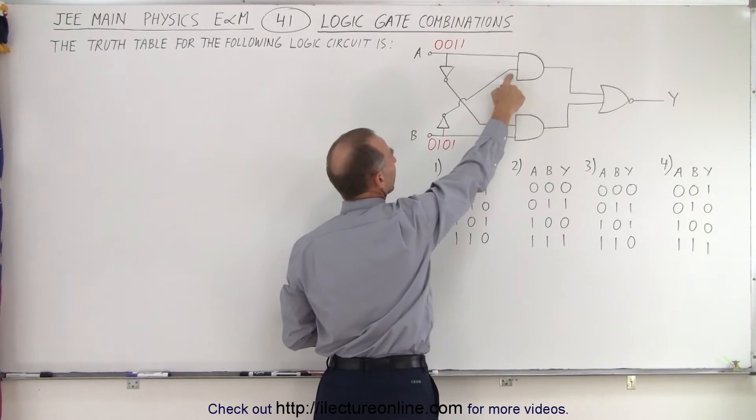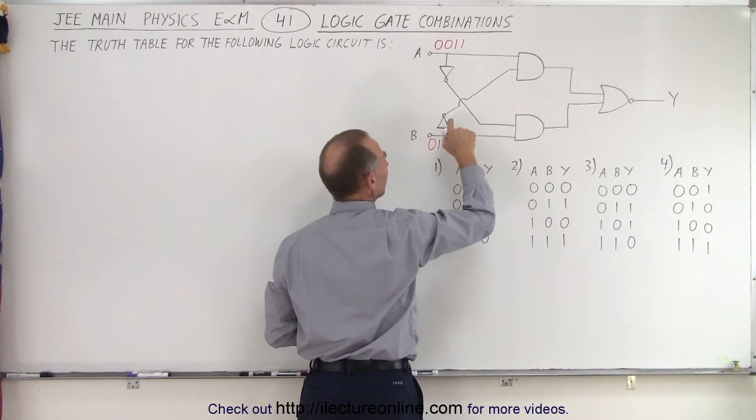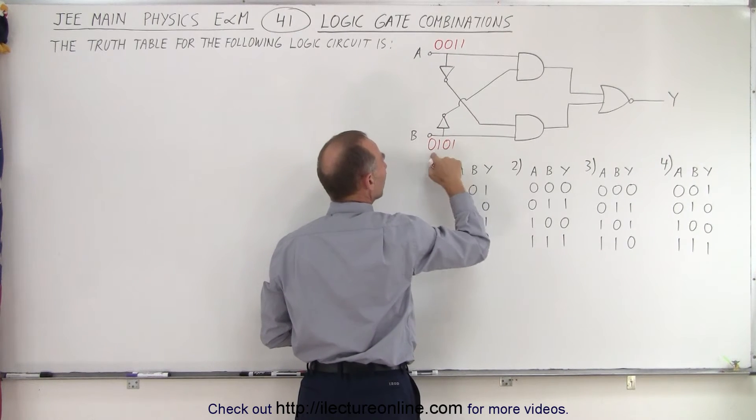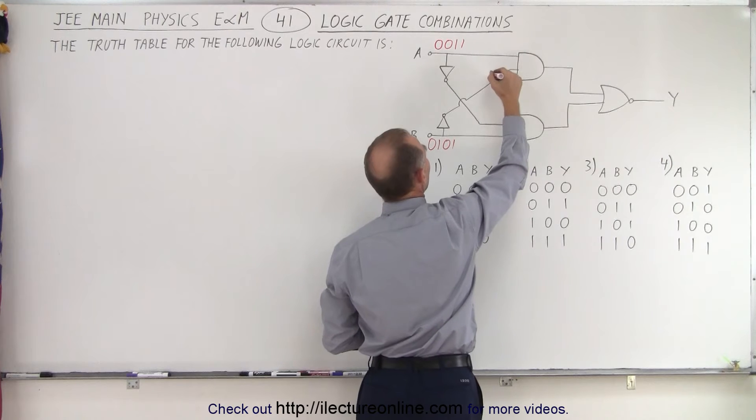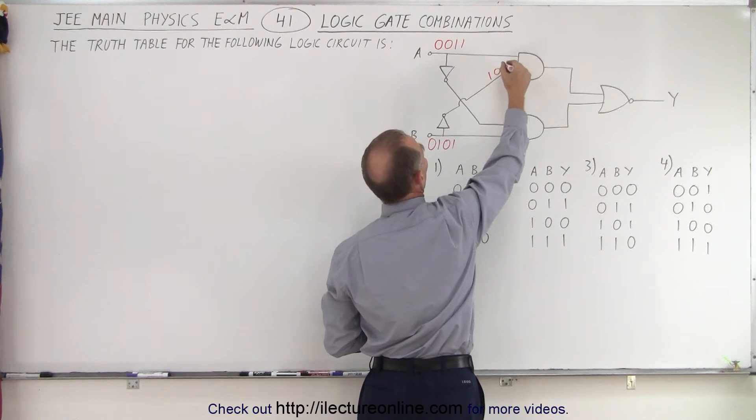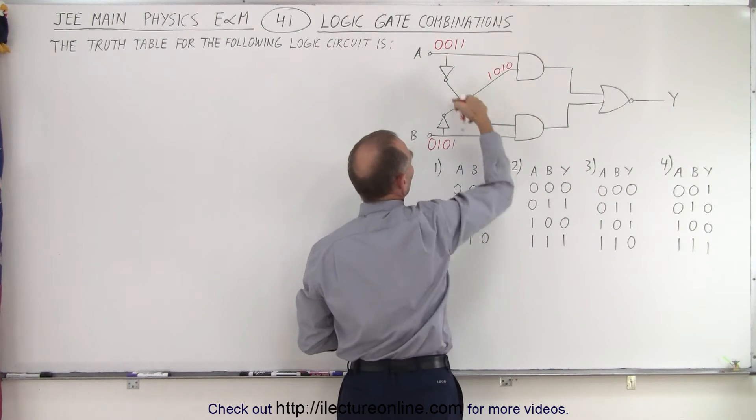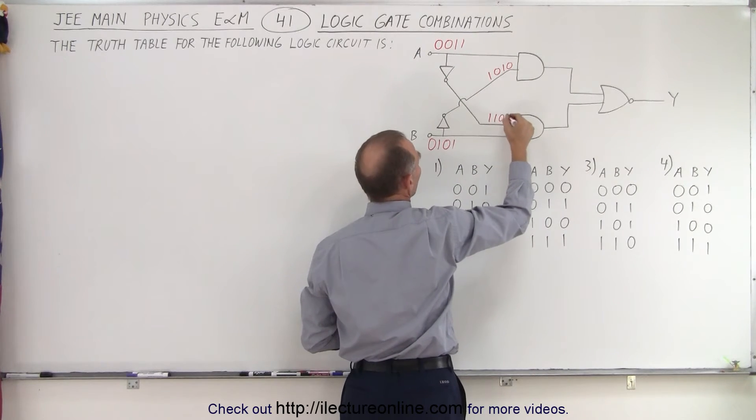Now the other input on the gates comes from the output of the NOT gate. So a NOT gate means you get the opposite of the input. So this becomes a 1 0 1 0 at this AND gate, and over here we'll get a 1 1 0 0.